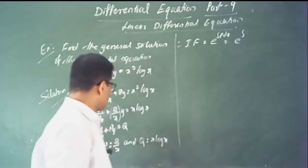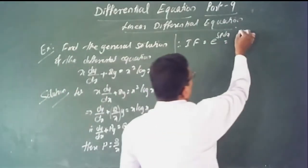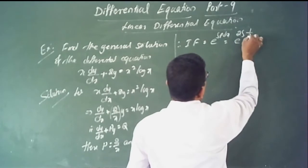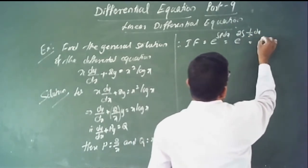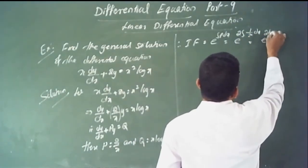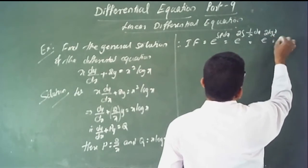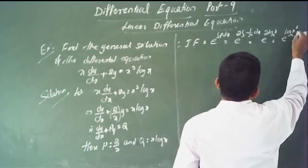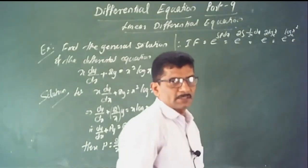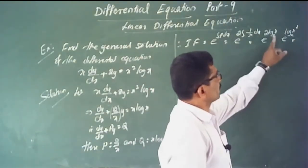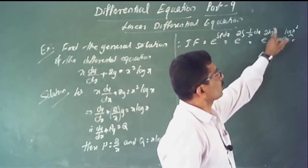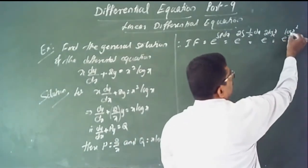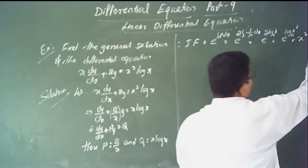Next, find the integrating factor. The integrating factor is e to the power of the integral of p dx, which is e to the power of the integral of 2 times 1/x dx. This equals e to the power of 2 log x, which using properties of logarithms equals e to the power of log x squared.